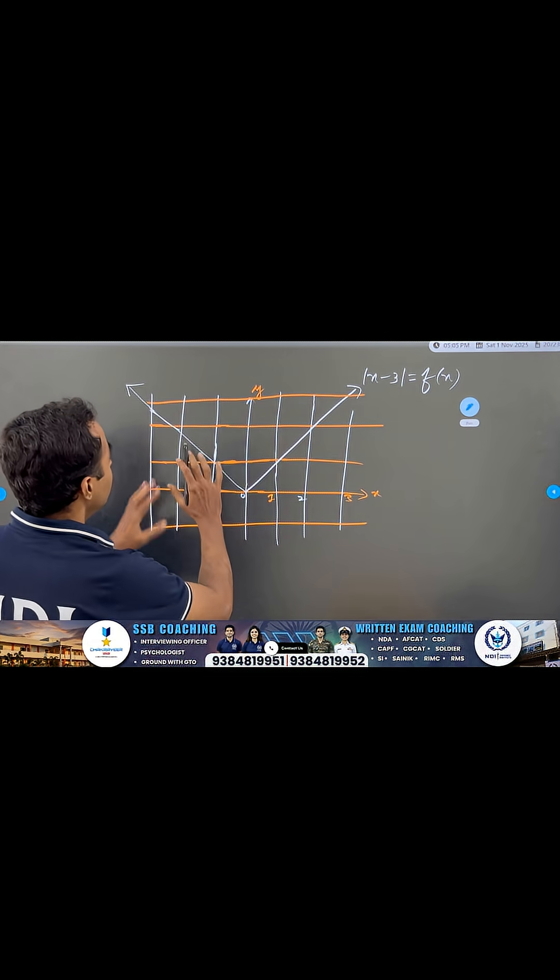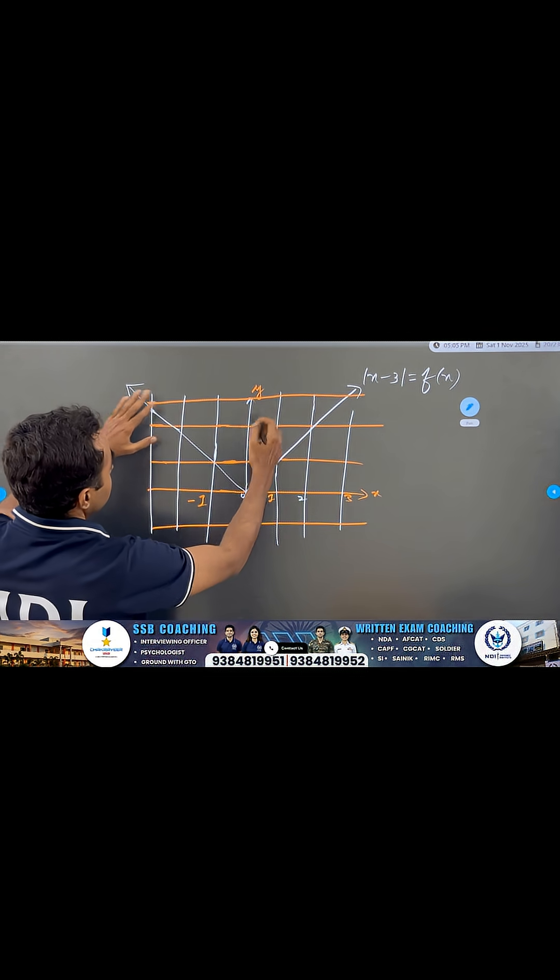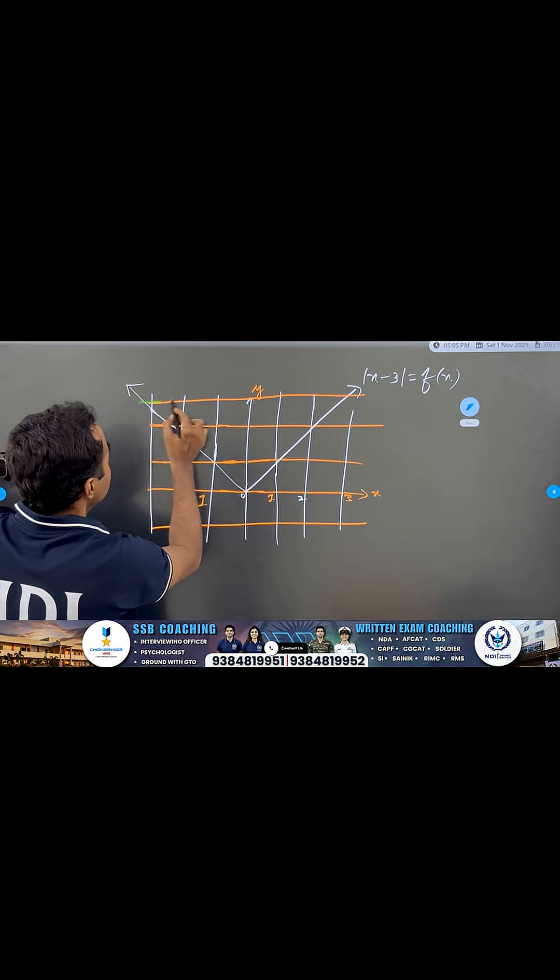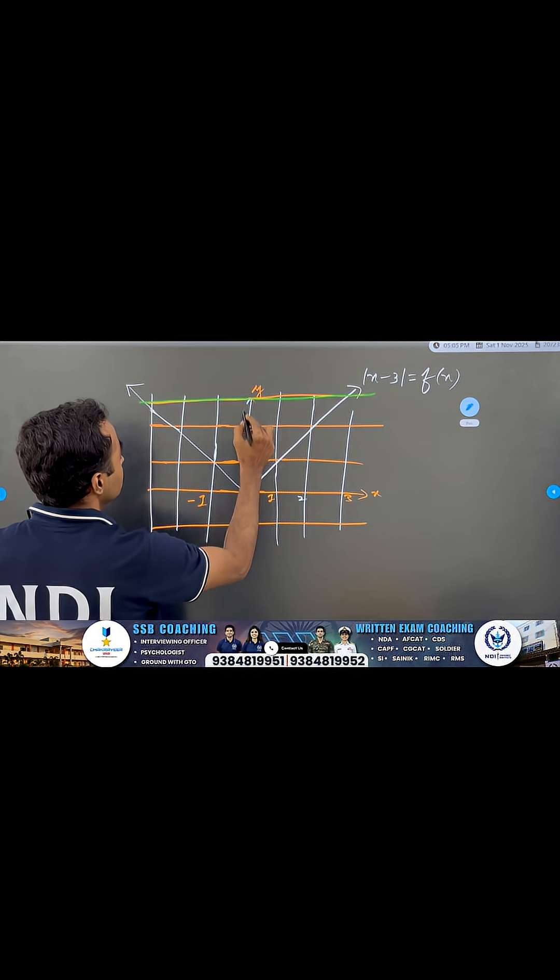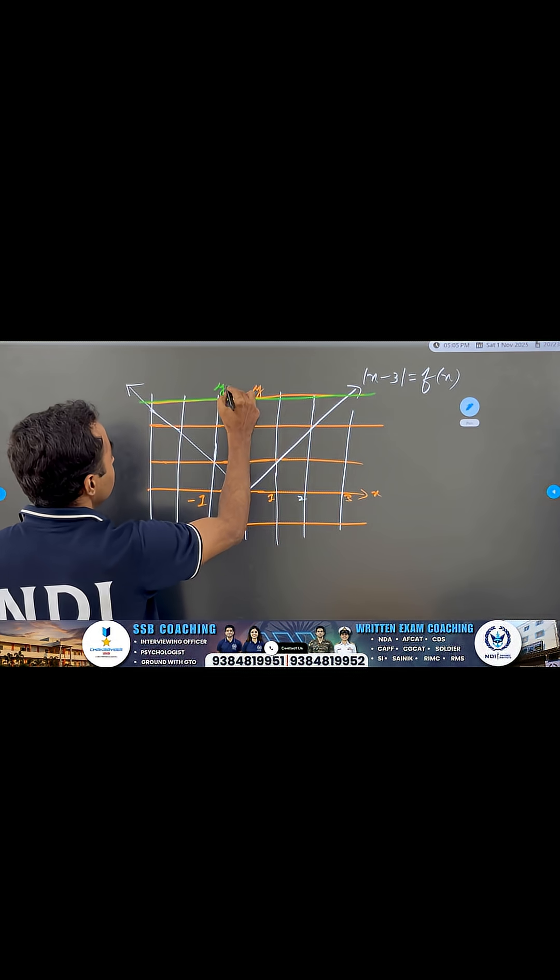Now, if I want to calculate only this area, which is covering this part. Y is equal to 3 is what? This is 1, this is 2, this is 3. So, this is Y is equal to 3, the green line.